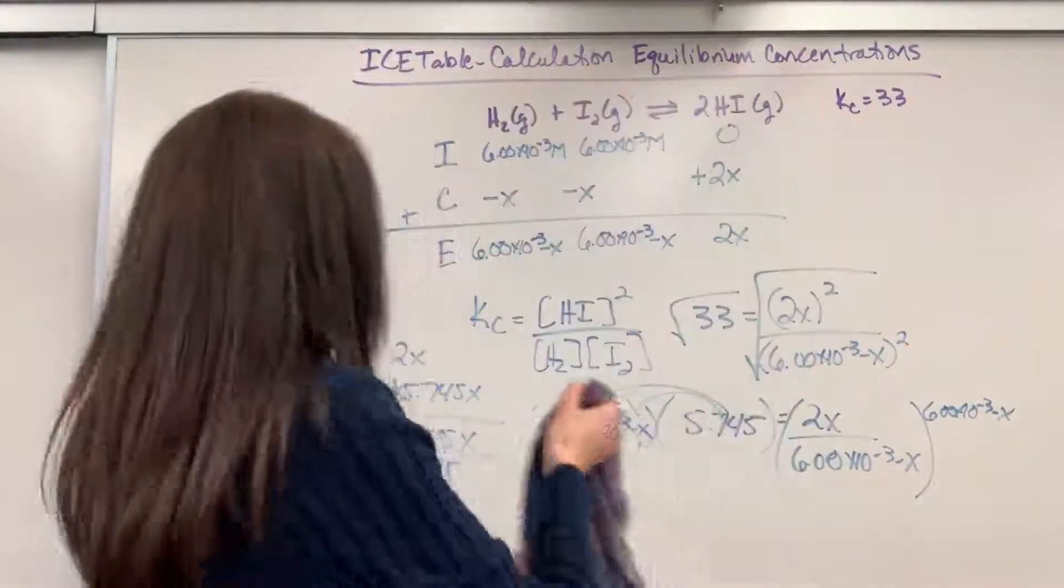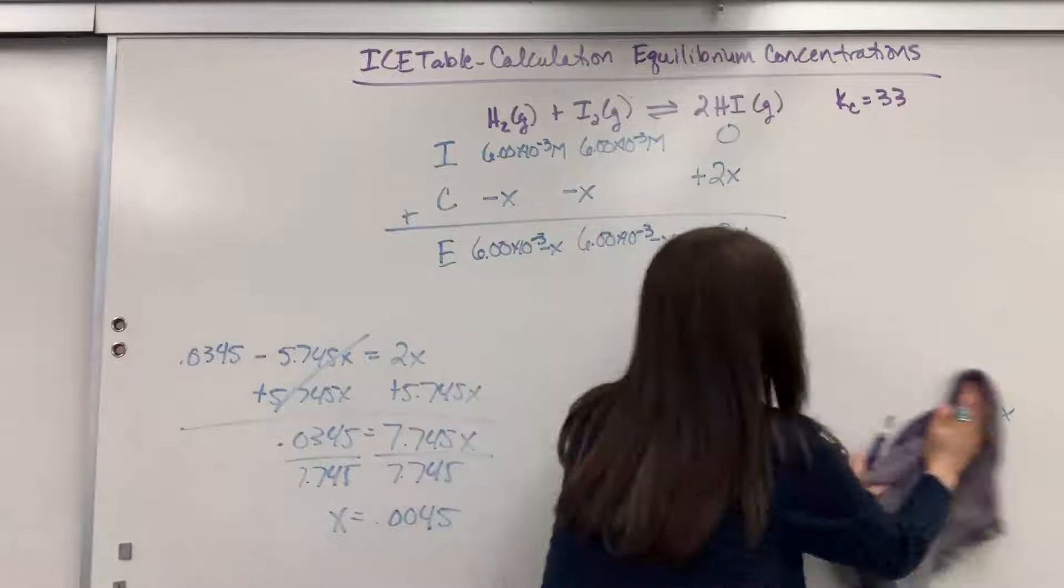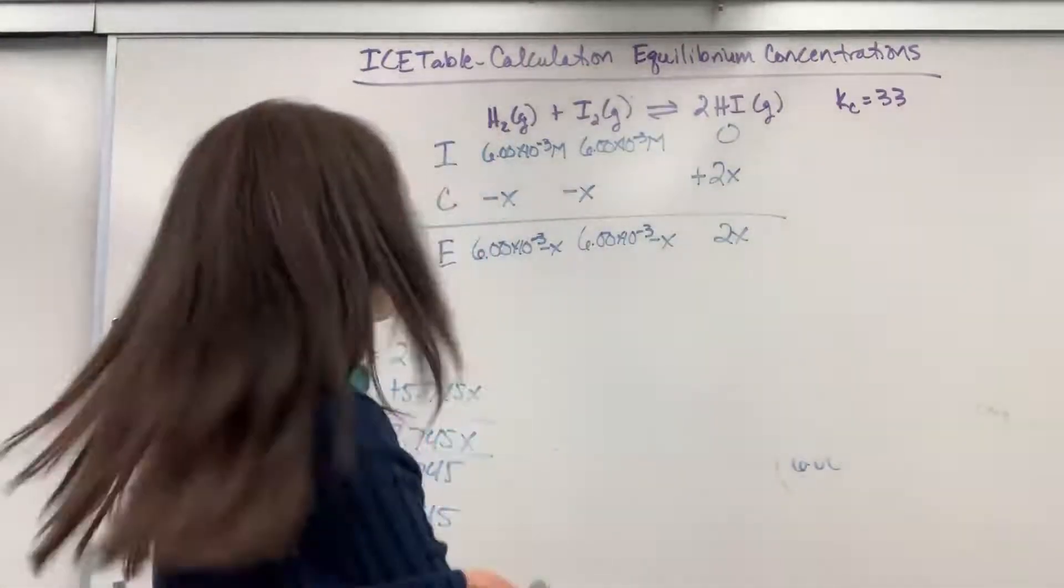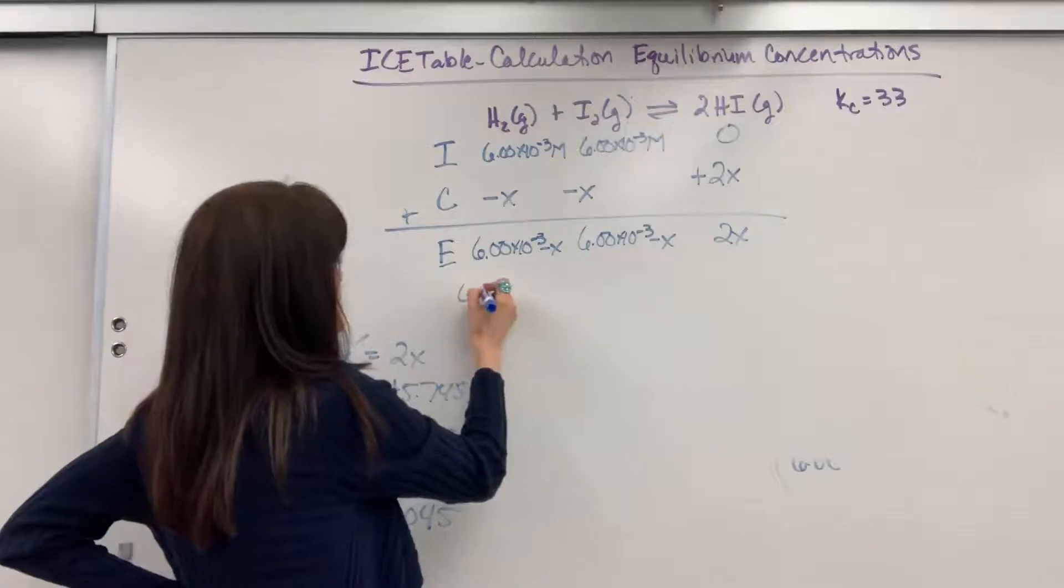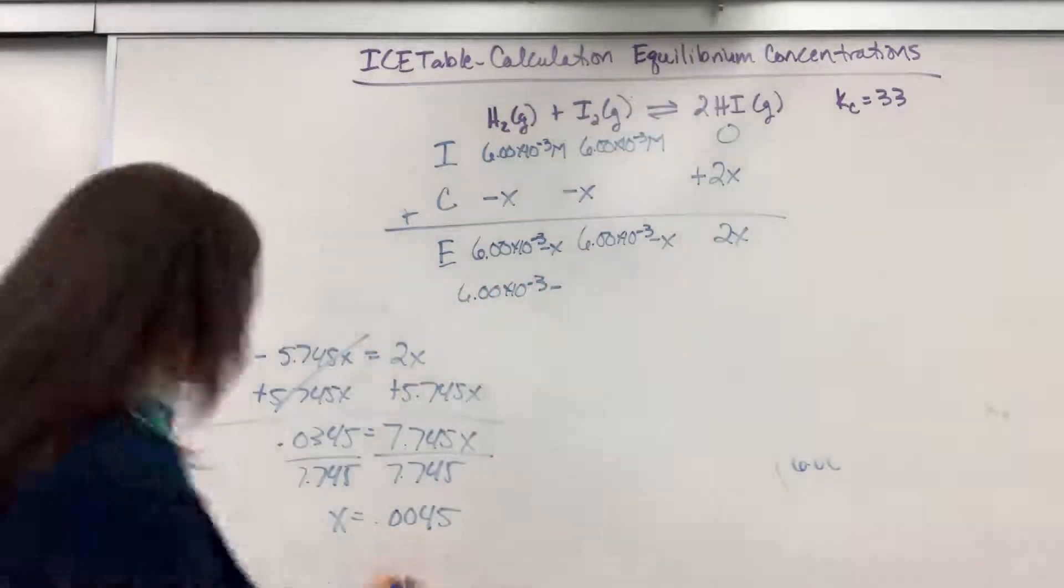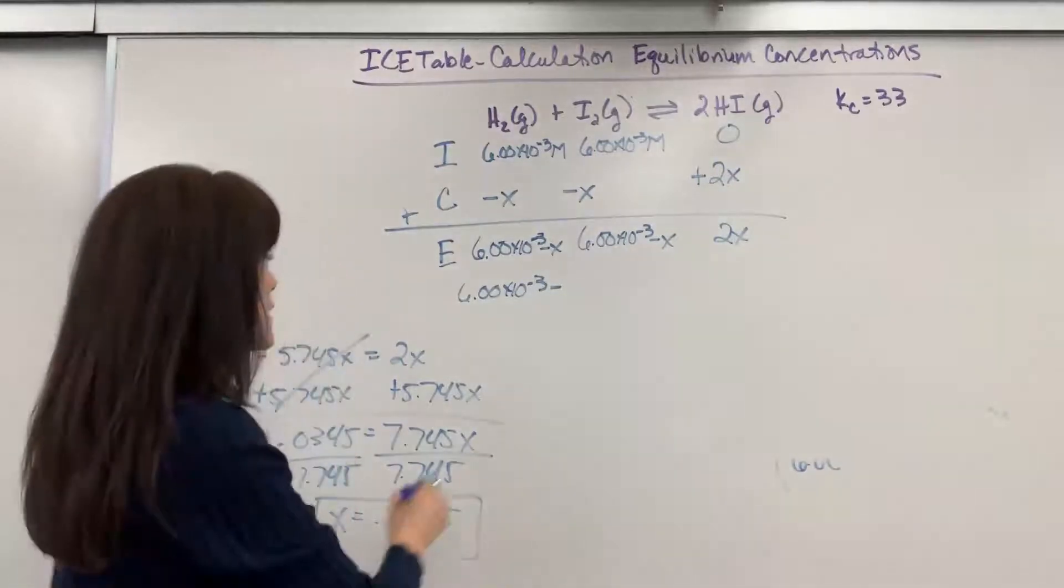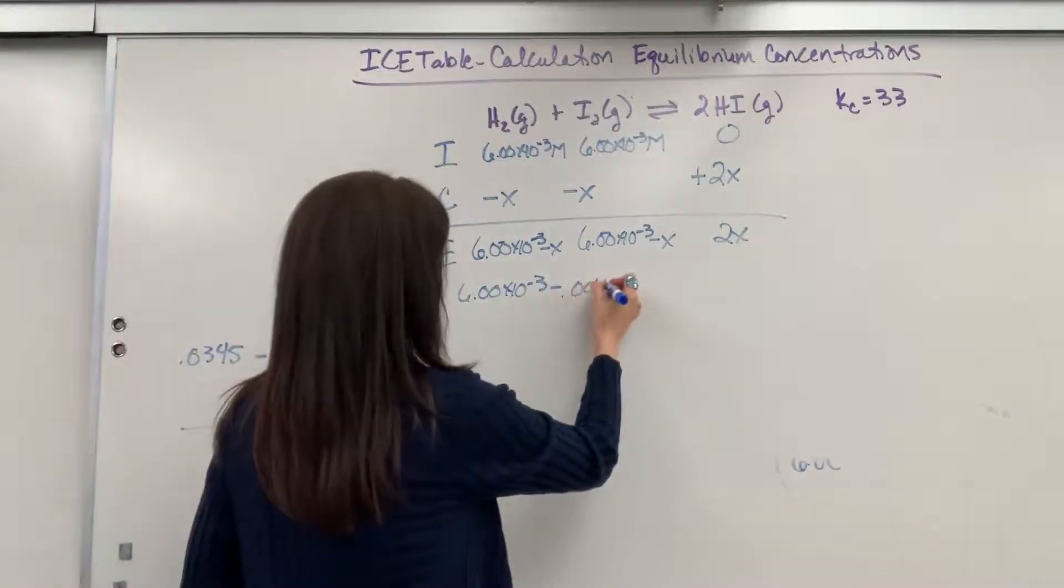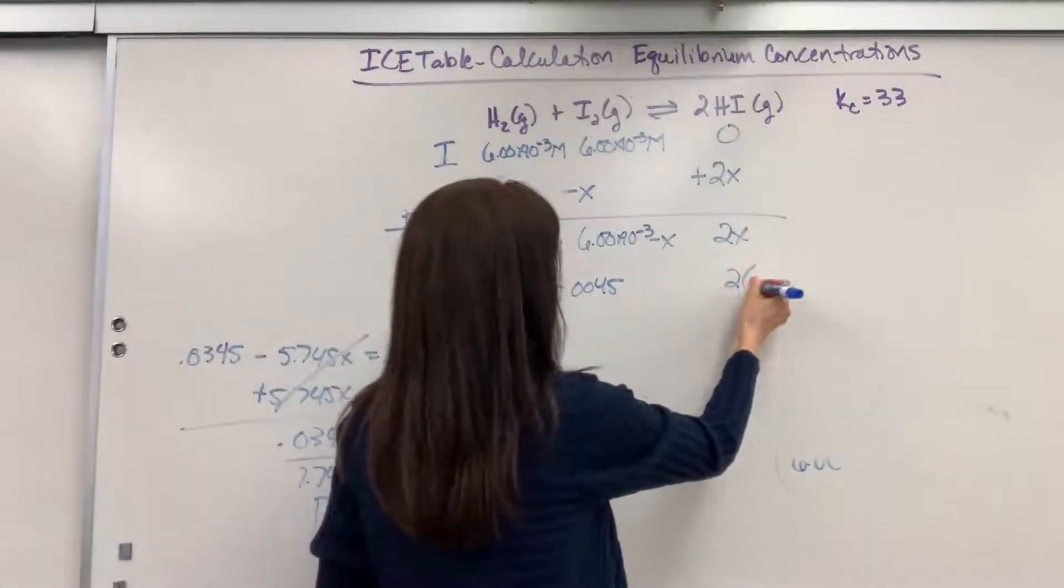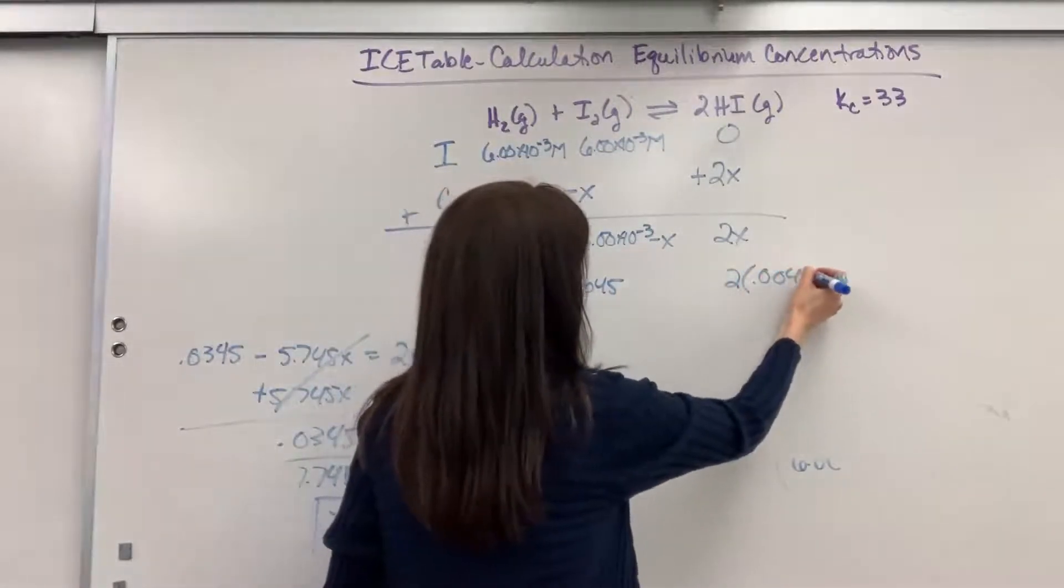Let me clean this off. We'll make a little bit of room here. Okay, so let's substitute in that X. We will have 6.00 times 10 to the minus 3 minus X, which is 0.0045. And then over here, we're going to have 2 times X, which is 0.0045.